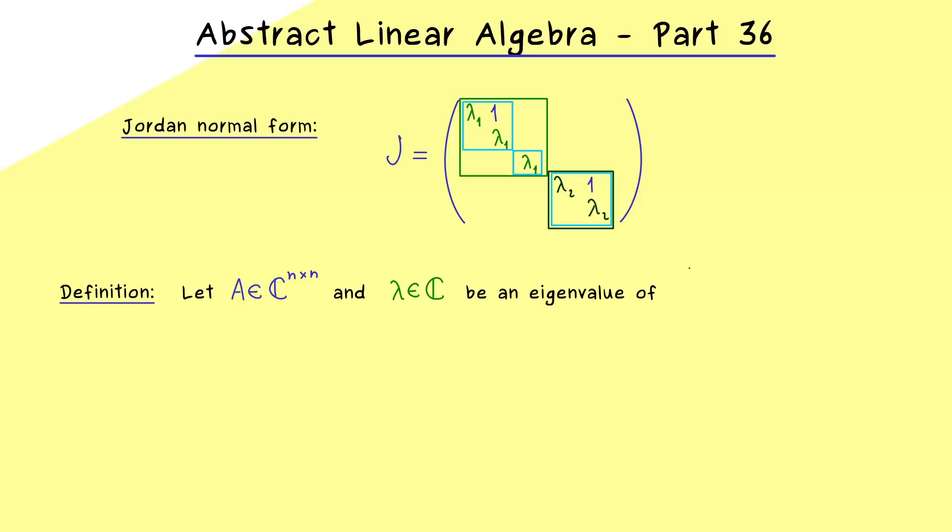So let's fix an eigenvalue lambda for our matrix A, which means we already know that we have eigenvectors. This means the following kernel here is non-trivial. And you know we always have A minus lambda times the identity matrix. Exactly this is the definition of the eigenspace associated to the eigenvalue lambda.